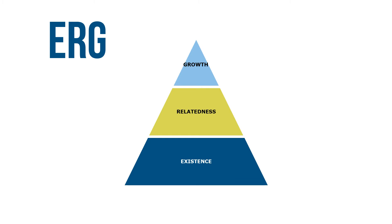To use the ERG theory, answer six questions. 1. What need does the individual have? 2. What needs have been satisfied? 3. Which unsatisfied need is the lowest in the hierarchy? 4. Have some higher-order needs been frustrated?